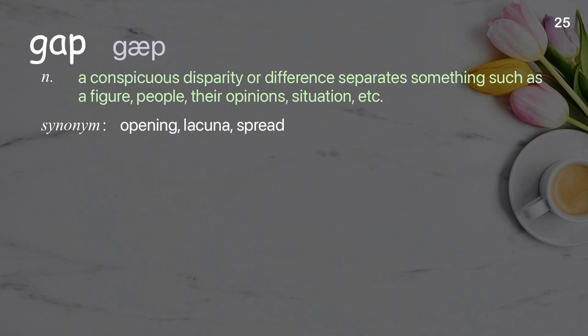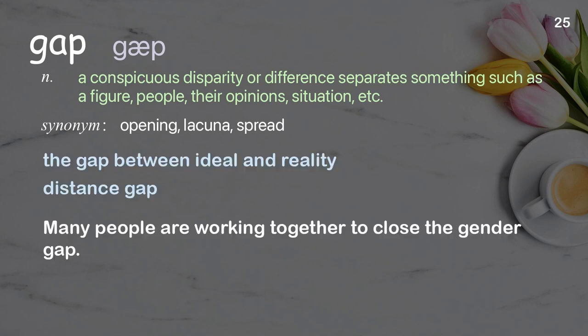Gap: a conspicuous disparity or difference that separates things such as figures, people, their opinions, or situations. Examples: the gap between ideal and reality, distance gap. Many people are working together to close the gender gap.